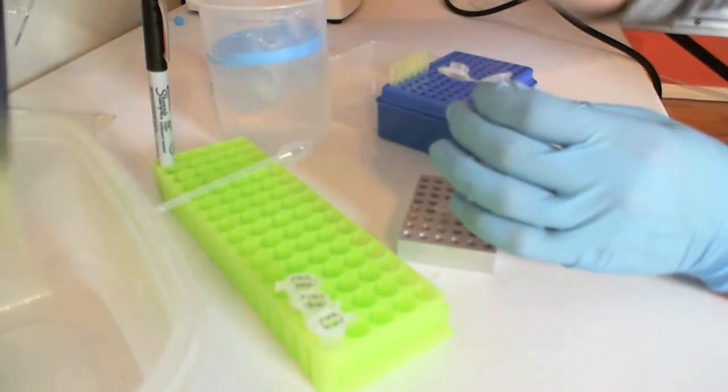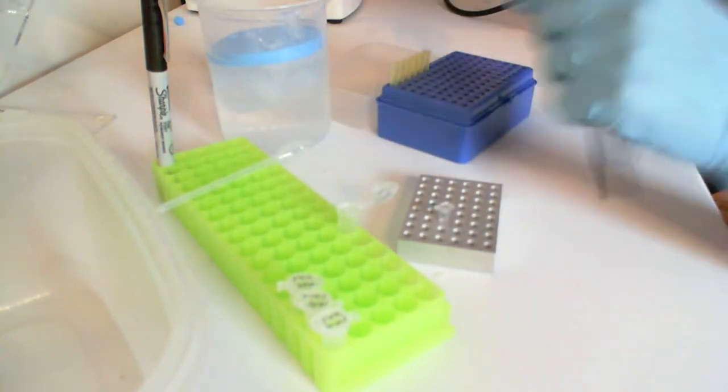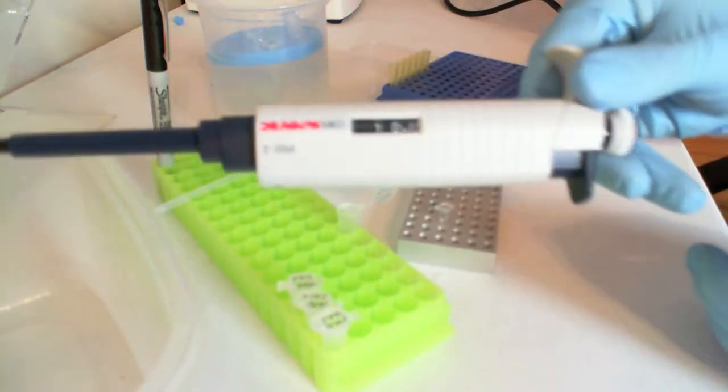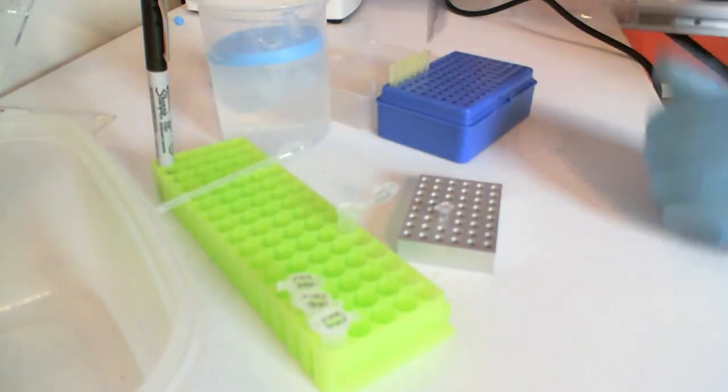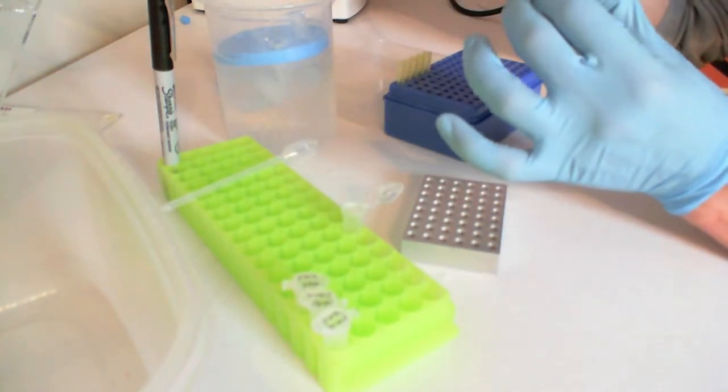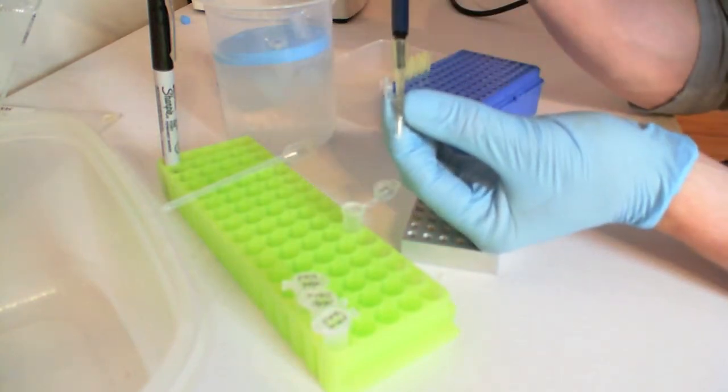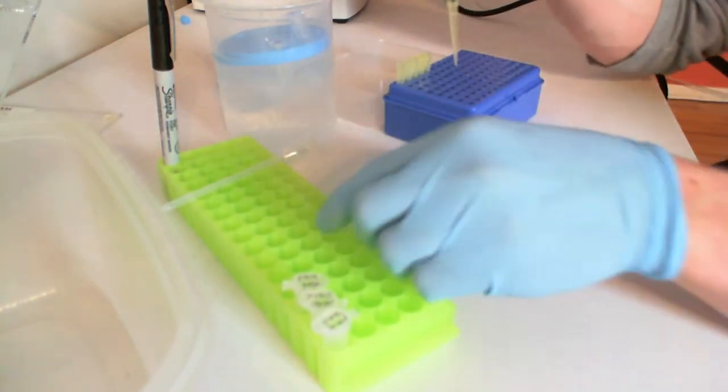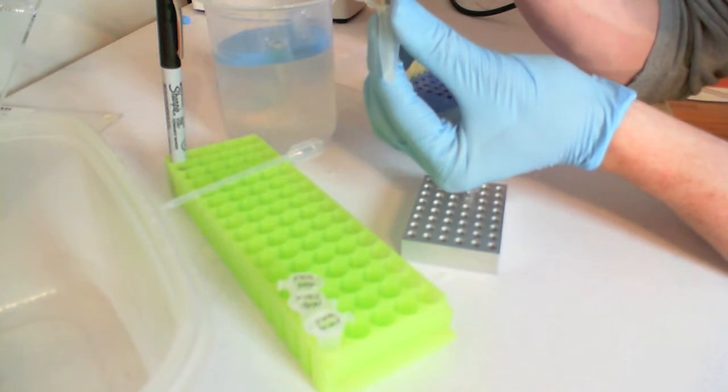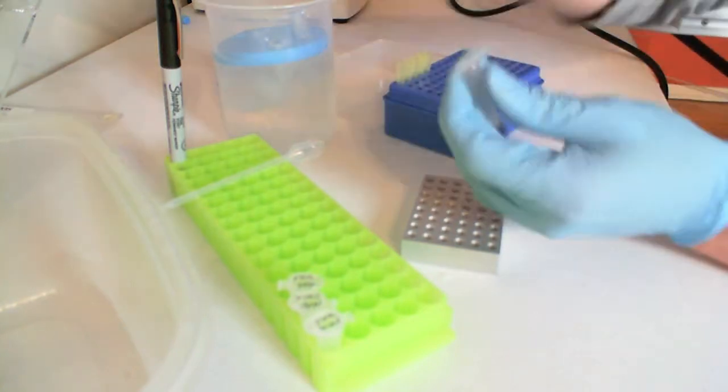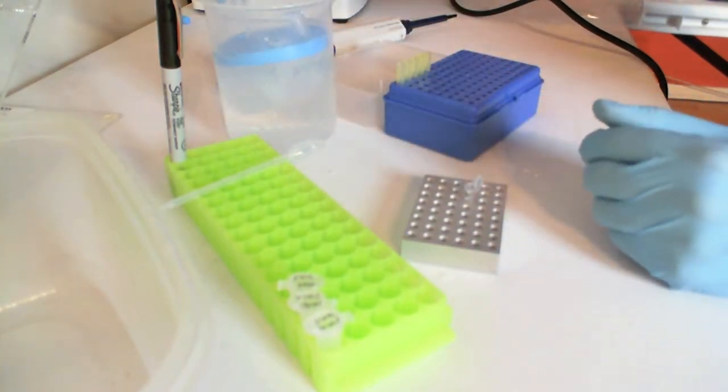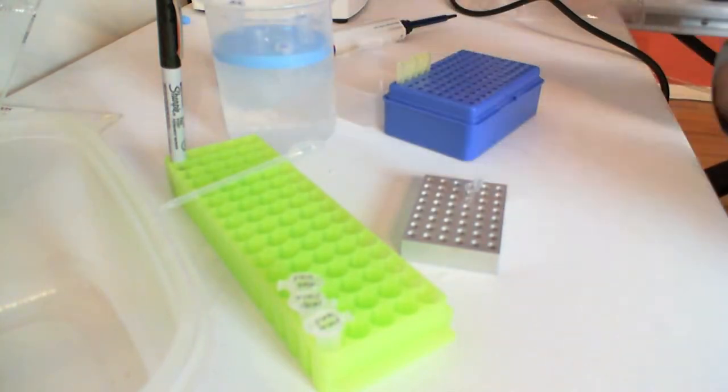Now after you eject your tip, take your ligation reaction from lab three. You're going to be adding 10 microliters of your ligation reaction. So using a new tip, 10 microliters here. Add it into your bacteria, pipetting up and down a little bit to mix them together. Eject your tip, cap your tube, and place it on ice for 20 minutes.